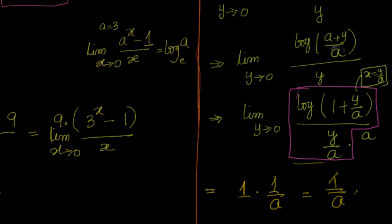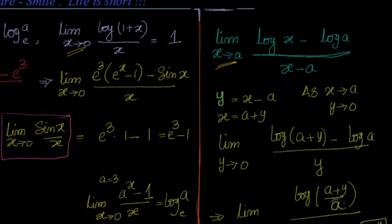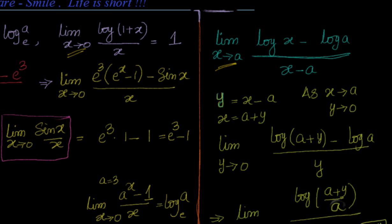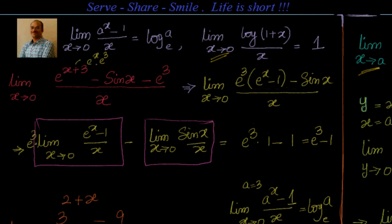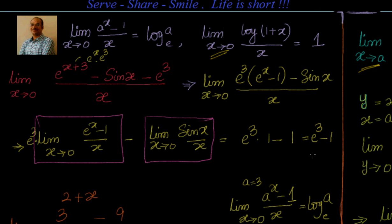Let us see if we have time for more problems or we will go to the next session. We will stop here. In the next session, we will go to another important standard result. Once you are conversant with all the standard results and different types of functions, limits is very easy to solve. We will look at the result: limit x tends to 0 of (1 plus x)^(1/x) equals e, see different forms of it, and solve examples. After that we will move to continuity of functions, then derivatives. I'll catch you in the next session. Thanks for your time. Bye for now.